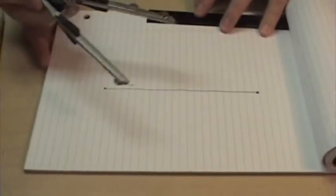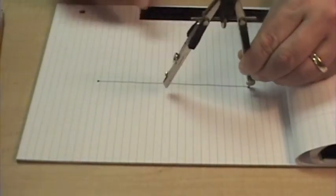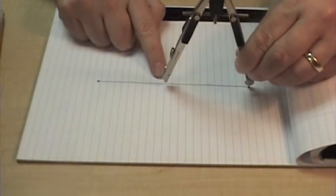We can use a compass to get the exact middle. What I'm going to do is stick the end or the point of the compass on one of the ends of the line segment. And the other end of the compass needs to be a little bit over midway. And I want to draw an arc.